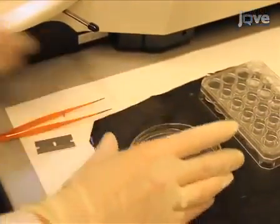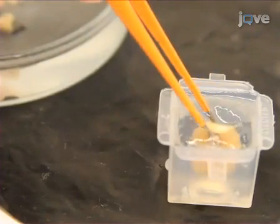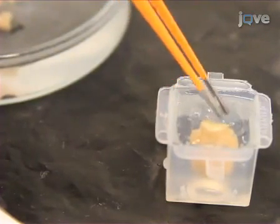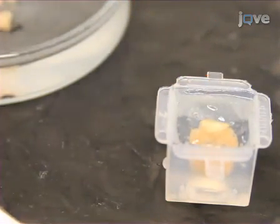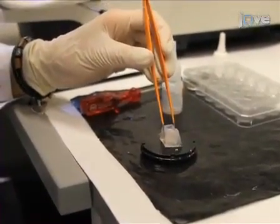The procedure begins by dissecting the fixed brain from an anesthetized perfused rat. Embed the brain in warm 5% agarose in a plastic mold. Orient the brain to the correct angle before the agarose sets solid. Mount the agarose block with the brain inside onto a sample holder.